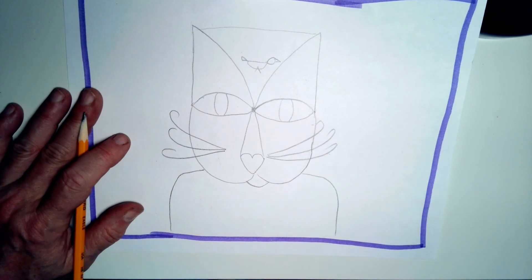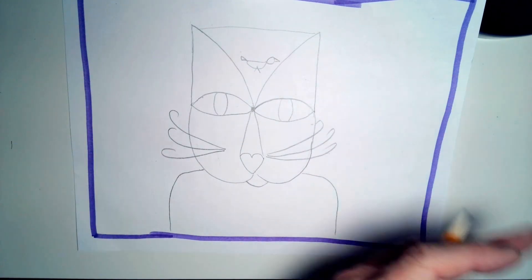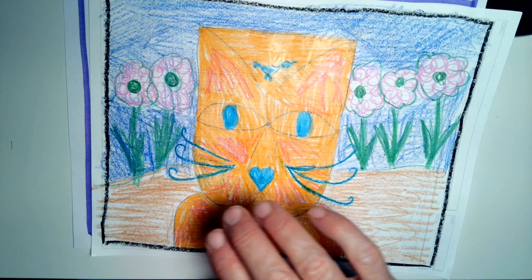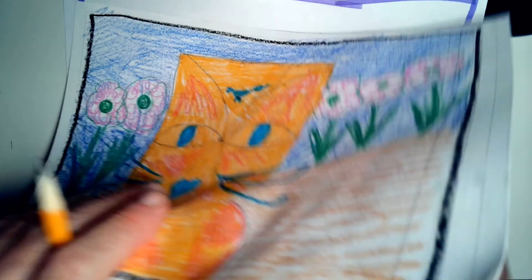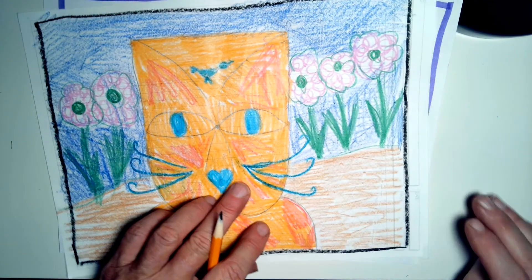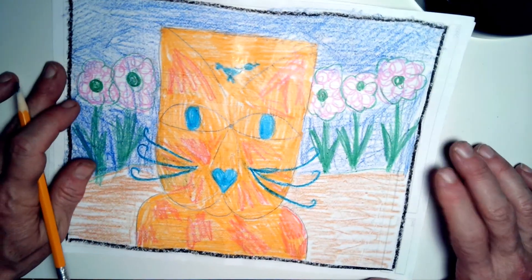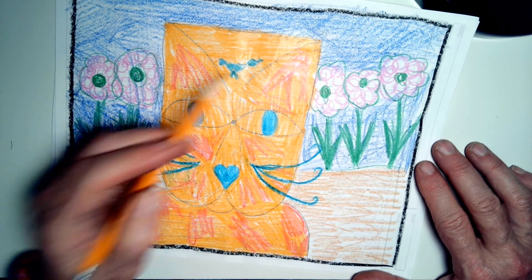Next step, color your cat however you want it to look. Here's an orange one. There are a whole bunch of cats around. So here's my orange one for today. There's a little blue bird up there. Have fun.